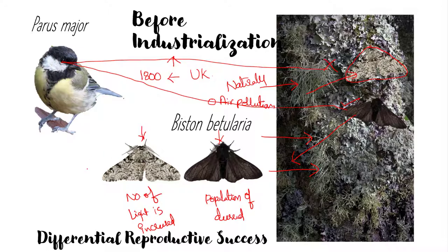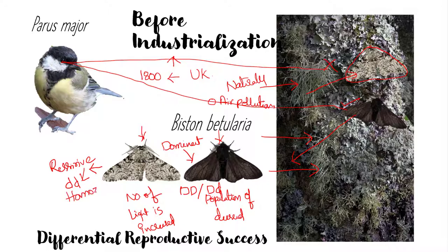When we talk about the genes regulating the color, the light colored moth is considered to be recessive, denoted with small d small d, and the dark colored moth is considered to be dominant, denoted with capital D capital D (homozygous dominant) or capital D small d (heterozygous dominant). The light colored moth is controlled by homozygous recessive alleles, small d small d. This was the condition before 1800, when there was no industrial revolution in the UK, and nature was selecting the light colored moth.